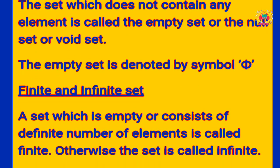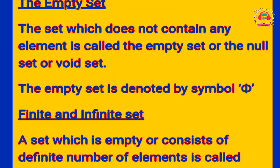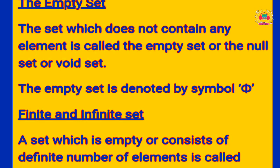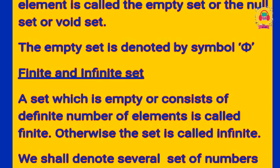If there is only one element in a set, it is called a unit set. For example, the set of even prime numbers contains only the number 2, since 2 is the only even prime number. So the set of even prime numbers is a unit set.